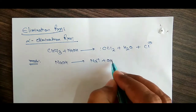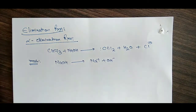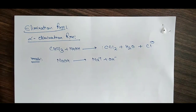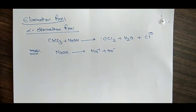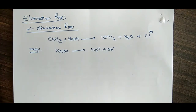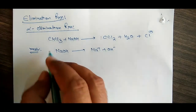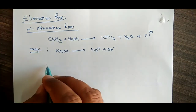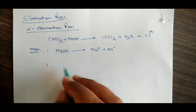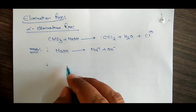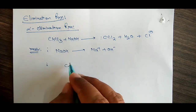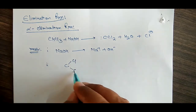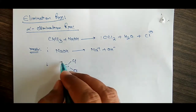Firstly, here we see chloroform and this is NaOH. The base will dissociate into the sodium positive and here is the OH negative ion. This is our reaction of the first step.